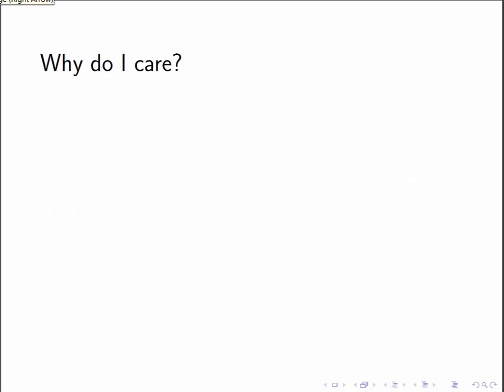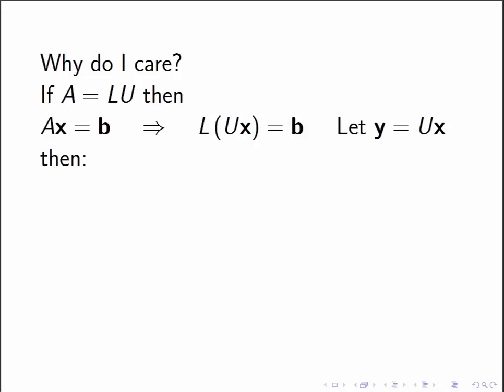All right, so why do we care about factoring a matrix into an upper triangular and a lower triangular matrix? Well, it turns out that if A is equal to a lower triangular matrix times an upper triangular matrix, and we needed to solve Ax equal to b, then I could substitute L times U in for A, and I could write it as L times Ux is equal to b.